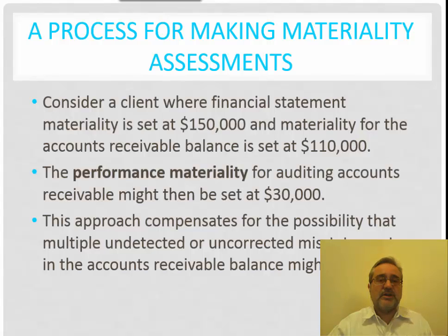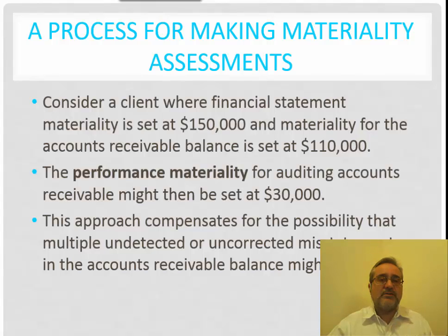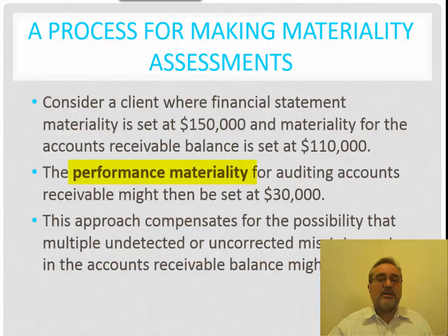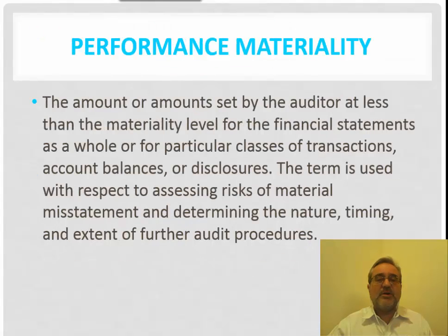Materiality is going to be based upon circumstances such as the size of the organization. Consider a client where financial statement materiality is set at $150,000. The auditor has set materiality at $150,000, and the materiality for accounts receivable is set at $110,000 — a difference of $40,000. However, based upon a performance materiality for auditing accounts receivable, we might set this at $30,000, which compensates for the possibility that multiple undetected or uncorrected misstatements in accounts receivable might exist.